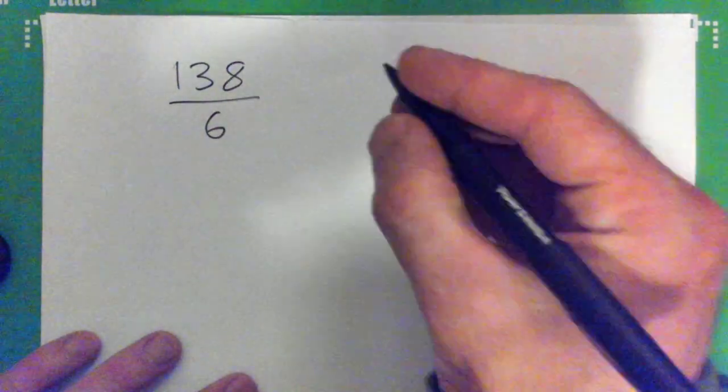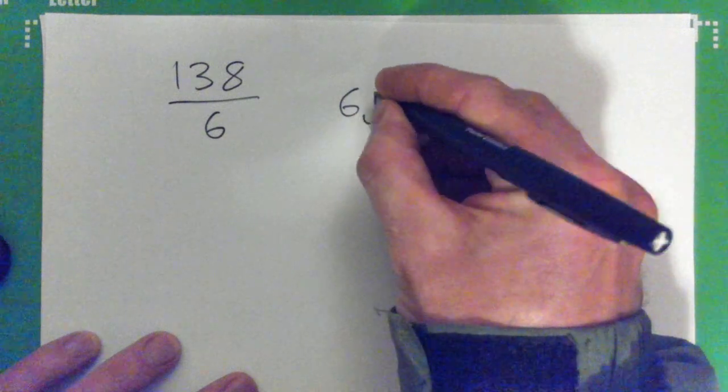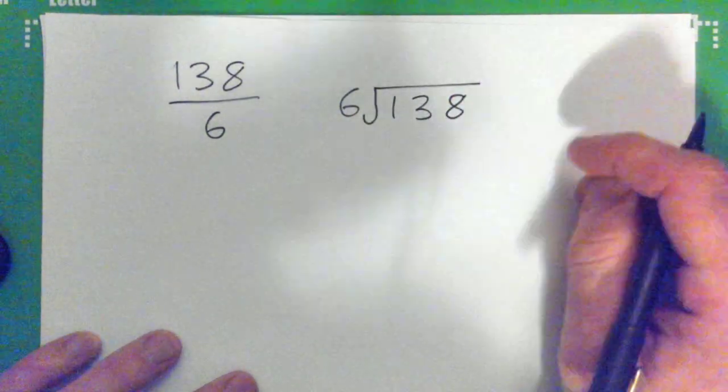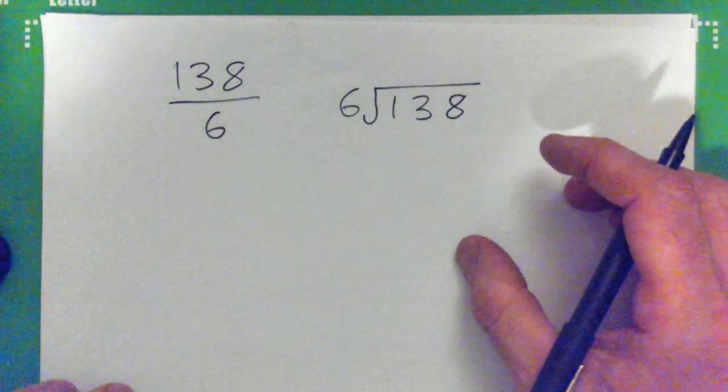Okay, so just write that down. It's 138 over 6. We're going to do this: 6 into 138, which is the same thing, right? We're going to do long division and take our time here.